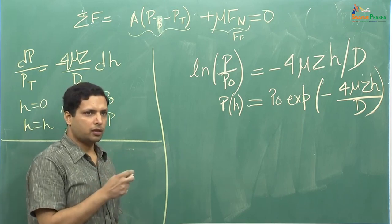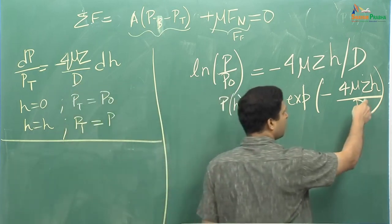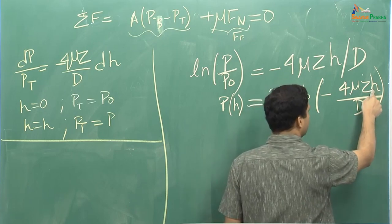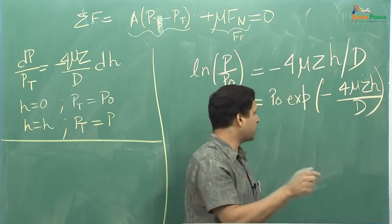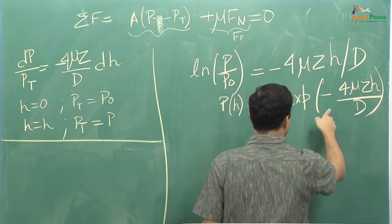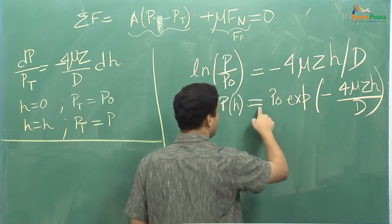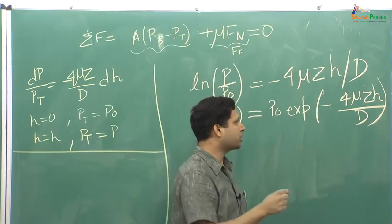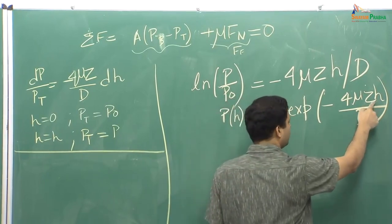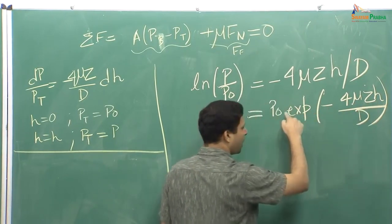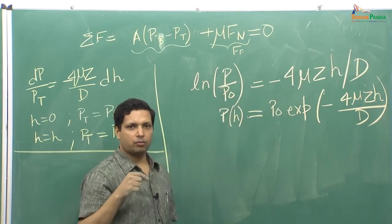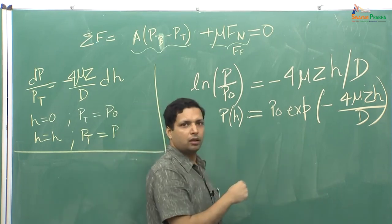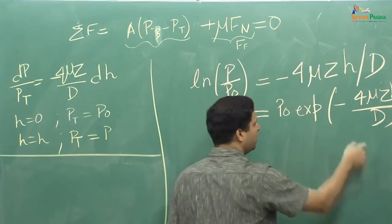If you put H equal to 0, which means you are looking just at the surface, this becomes e to the power 0 equal to 1, so it is equal to P naught. Just at the surface it is equal to P naught, as you would have expected. And when you move away from that surface — the point at which the pressure is being applied into the compact — the pressure exponentially decreases.